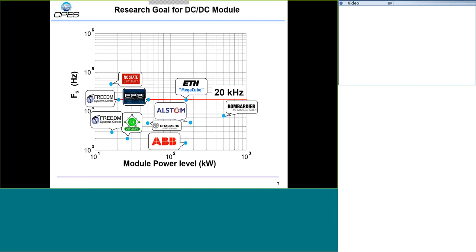Before building the hardware, we surveyed other people's work. We found that for today's DC-DC modules, most people limit the frequency below 20 kHz, with power levels from 10 kilowatts up to more than 100 kilowatts. Our target is a much higher frequency of 500 kHz, though we start with a lower power of 50 kilowatts per module. Eventually we can put modules in series and parallel to get high power, so starting with a moderate power module is sufficient.